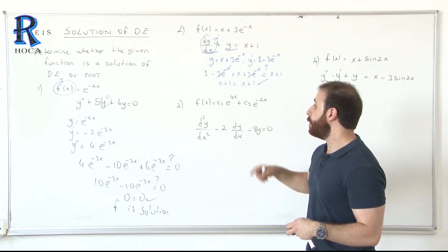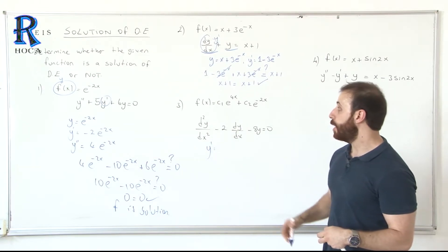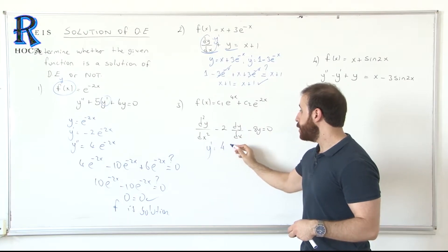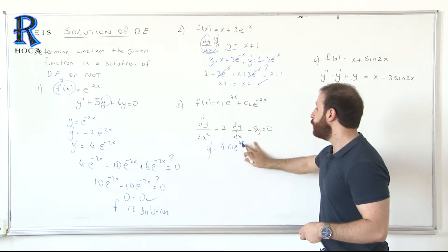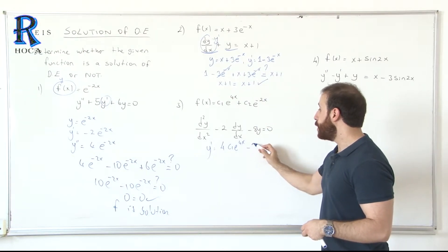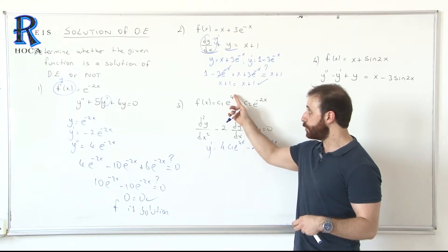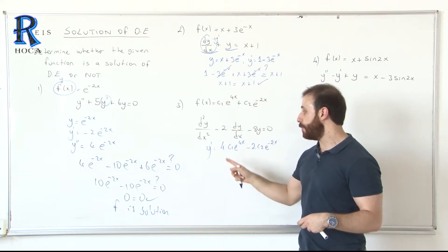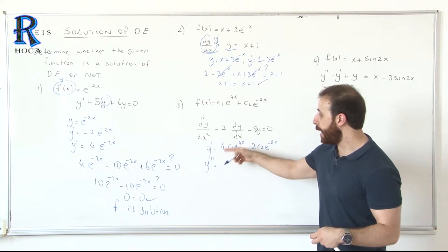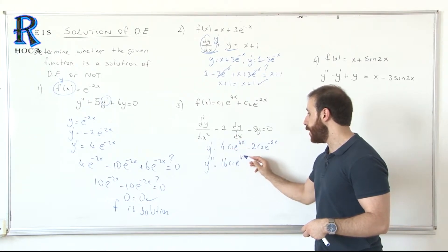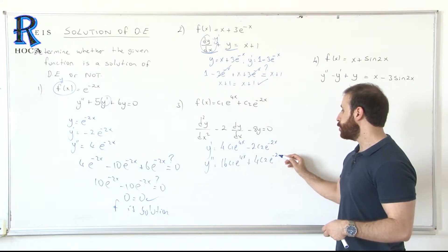We need the first and second derivative. What is y prime? For C1·e^(4x) the derivative gives 4C1·e^(4x). And the derivative of C2·e^(-2x) gives minus 2C2·e^(-2x). So y prime equals 4C1·e^(4x) minus 2C2·e^(-2x). For the second derivative: derivative of 4C1·e^(4x) gives 16C1·e^(4x), and derivative of minus 2C2·e^(-2x) gives 4C2·e^(-2x).